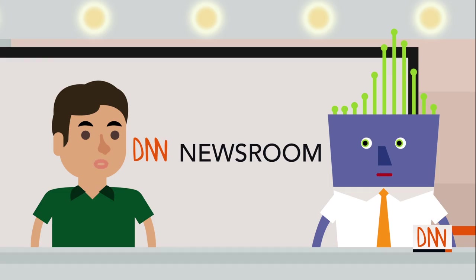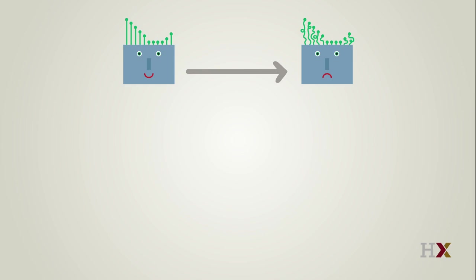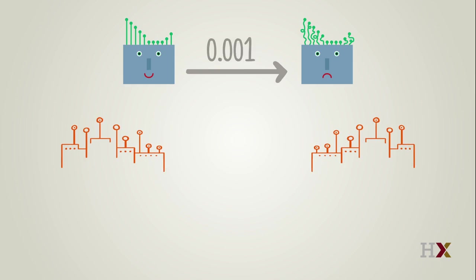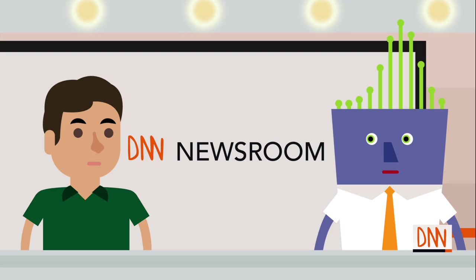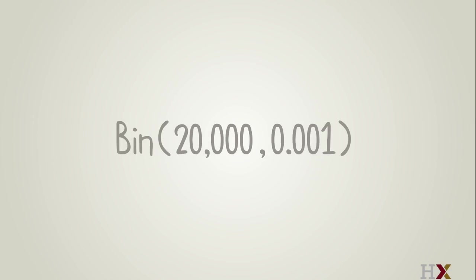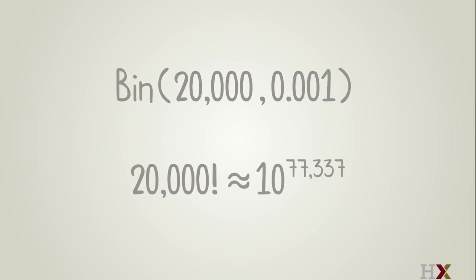Hypertangulosis is rarer than you may think, possibly because the media have been covering this 24 hours a day. It would be much better to obtain good data on how many cases there are as a function of time. According to preliminary estimates, the probability of coming down with hypertangulosis tomorrow for someone whose hair is currently fine is only 0.001. The number of people in Discreet Town with healthy hair is currently about 20,000, so we can expect about 20 new cases tomorrow. Assuming independence, the number of new cases is binomial(20000, 0.001). That's pretty unwieldy to work with, since calculations involve extremely large numbers like 20,000 factorial, which is about 10 to the 77,337th power.